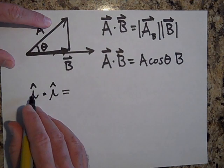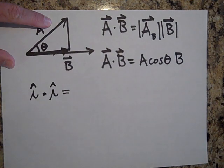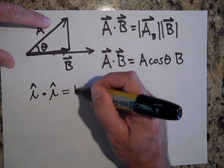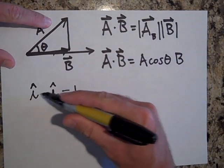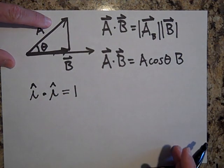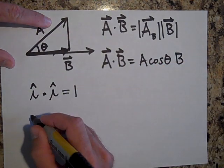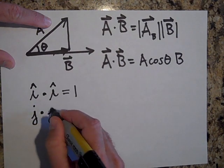Well it turns out that all of this is in that direction so I would multiply one times one which gives me one and I lose the unit vector, that's just one. Where is j dot j? You know what this is going to be, that's going to equal one.